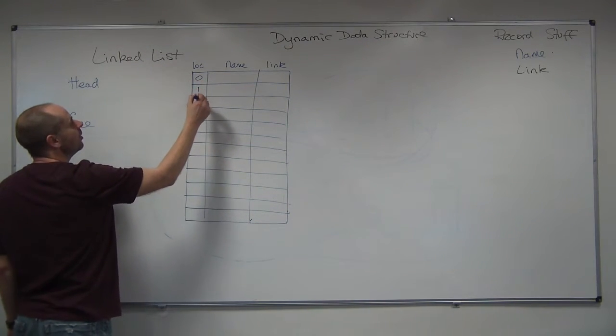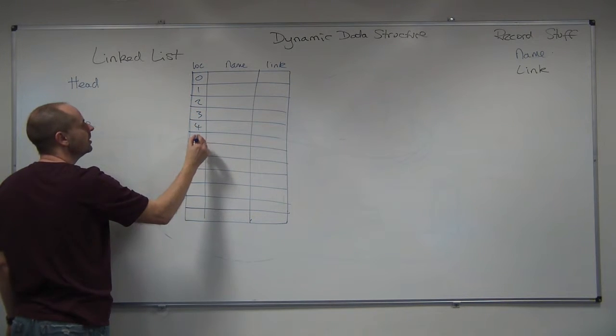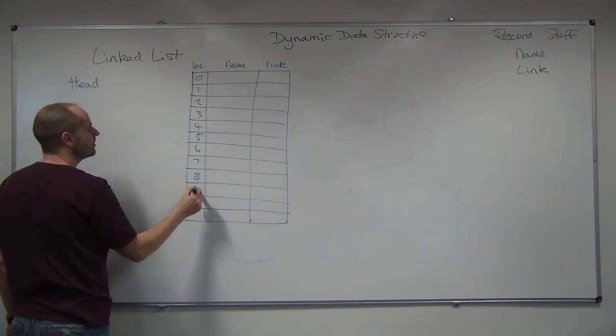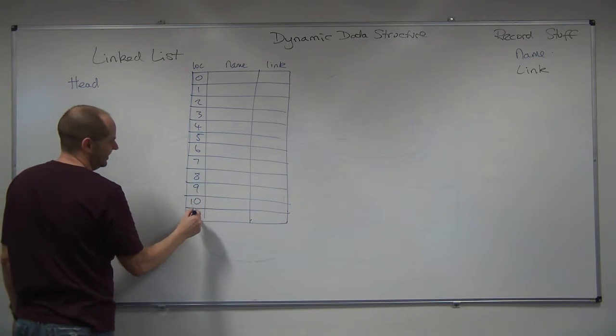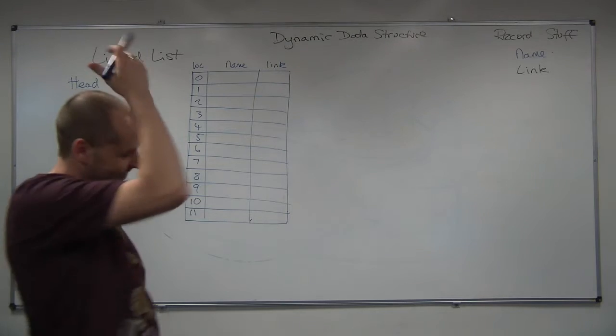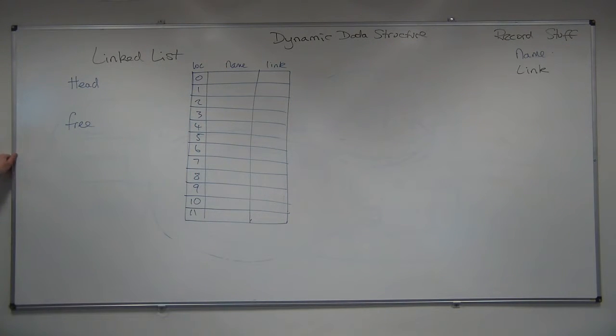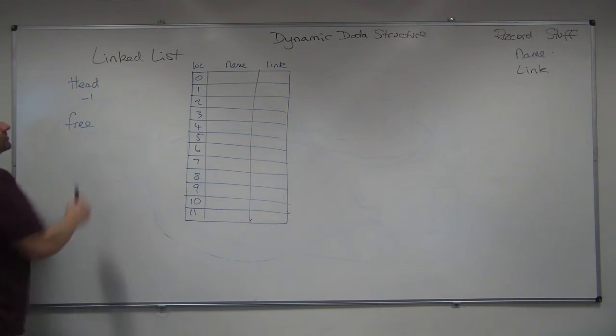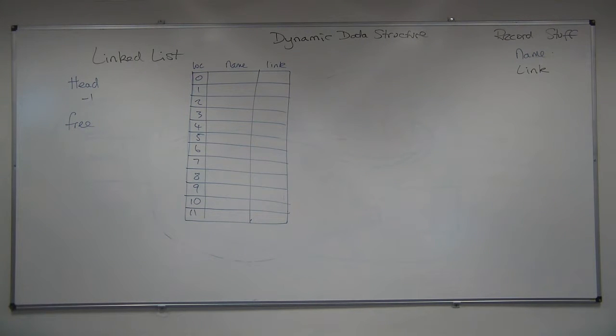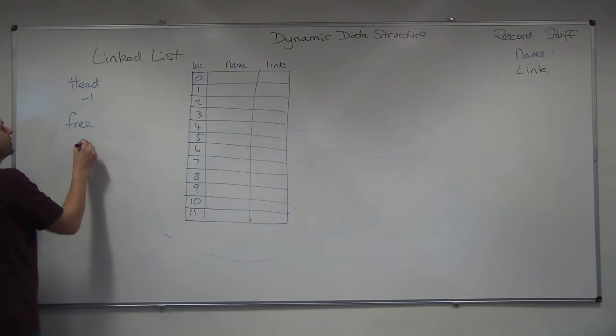So this is going to be a location of 0-1, 9. But this time we have to manage the free space. So we need a pointer that records, we've got nothing in here so we're going to put minus 1 for the head. The free space is going to point to 0.